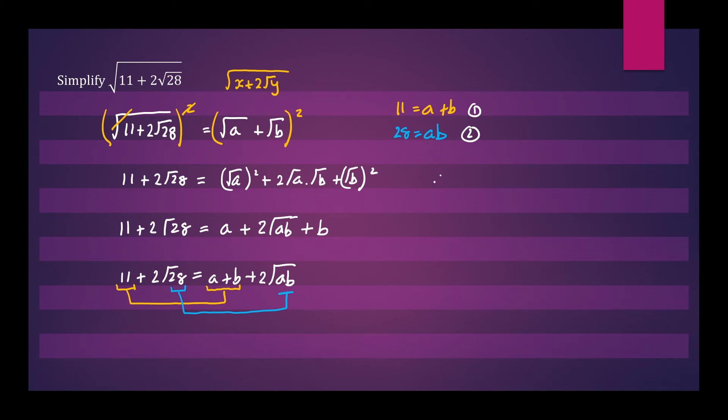So the two solutions here would be a equals 4, b equals 7. And it doesn't matter whether you write a equals 4, b equals 7, or a equals 7 and b equals 4. For this particular question, it doesn't matter.